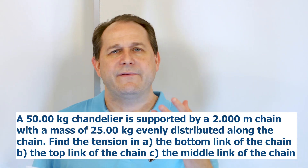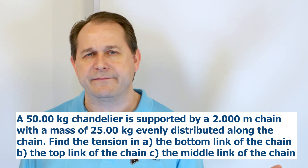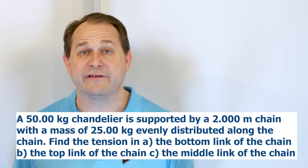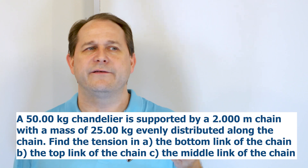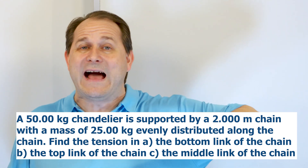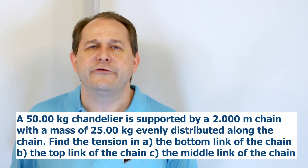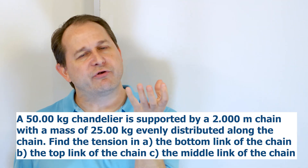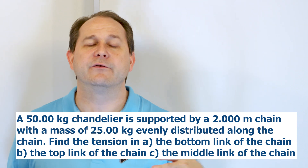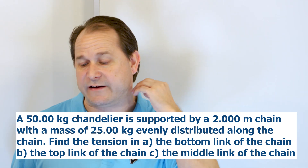So you have a chandelier hanging from a chain, and we have to find the tension in three different positions of the chain. When a problem says find the tension, all that means is find the force acting through the chain — it's just code for find the force. We know that the chain has to be pulling up in order to hold up that chandelier, and we're trying to figure out the differing amounts of force that exist along the length of that chain.